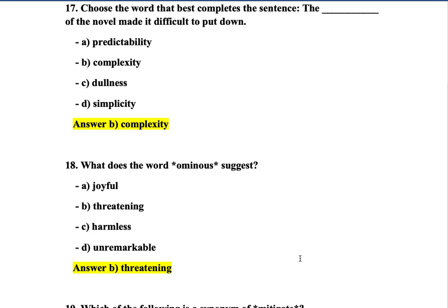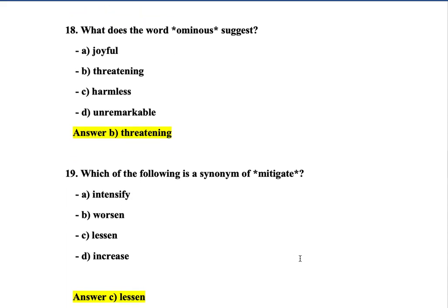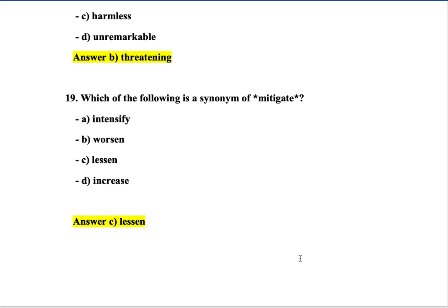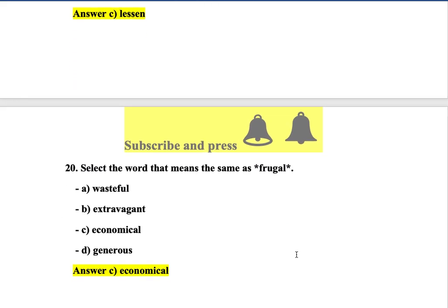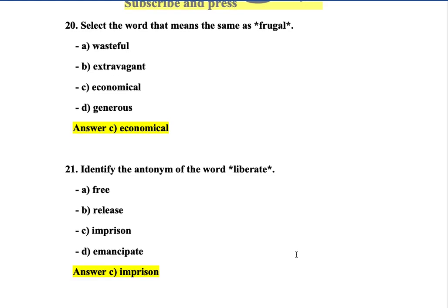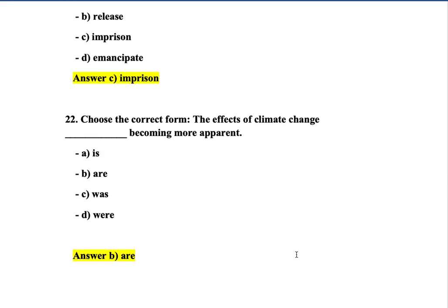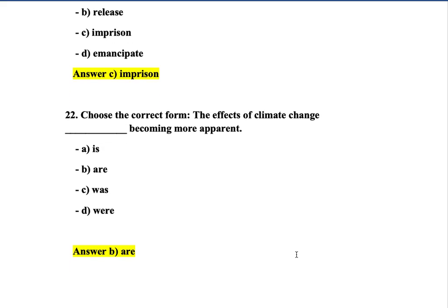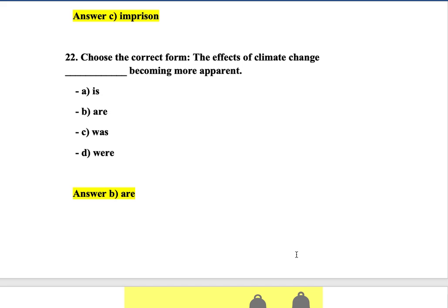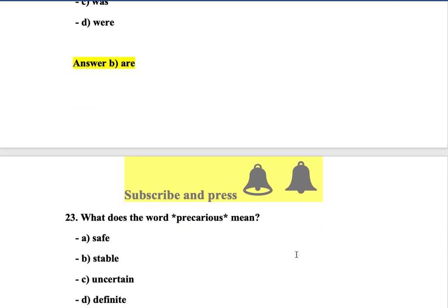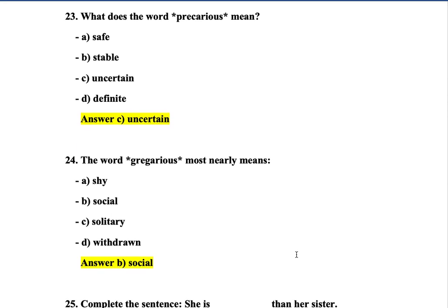Question 14: Complete the analogy — heart is to cold as stall is to short. Question 15: Identify the correct spelling — 'accommodate' — option C is correct. Question 16: Which word best fits the blank? 'The detective was vague about the details of the case' — option C. Question 17: Choose the word that best completes the sentence: 'The complexity of the novel made it difficult to put down' — option B. Question 18: What does 'ominous' suggest? Threatening — option B is correct. Question 19: Which word is a synonym of 'mitigate'? Lessen or decrease.